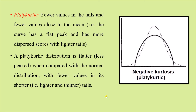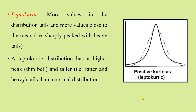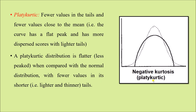The platykurtic curve has fewer values in the tails and fewer values close to the mean. Since we have fewer values, frequency is low, so the tail portion of the platykurtic curve is at a lower position compared to the mesokurtic curve — the dotted line in the tail is above the bold line. Similarly, the peak around the mean is at a lower position compared to the mesokurtic peak. Since both the tail and the peak are positioned lower than the mesokurtic curve, this is known as negative kurtosis. Whether kurtosis is positive or negative depends on the number of observations in the tail and around the mean, compared to the mesokurtic curve.